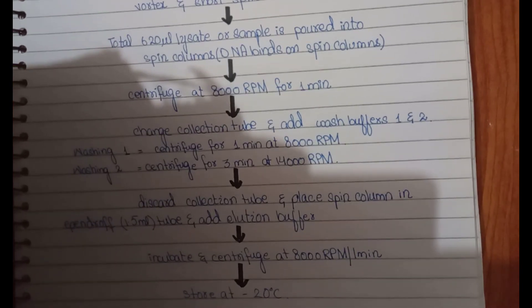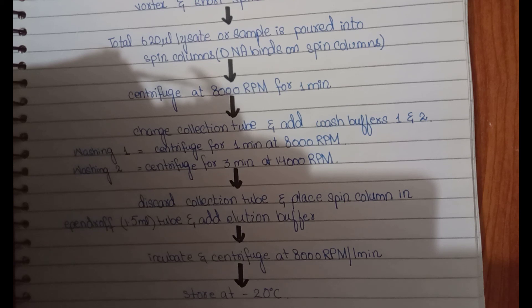The spin column is placed into an Eppendorf tube and the elution buffer is added. After adding the elution buffer, we incubate for about 1 minute, then centrifuge at 8000 rpm for about 1 minute. After centrifugation, the pure DNA is eluted and can be stored at minus 20 degrees Celsius for further procedures. This video is just a review about DNA extraction — for further details you can check your recommended books. Thank you and take care.